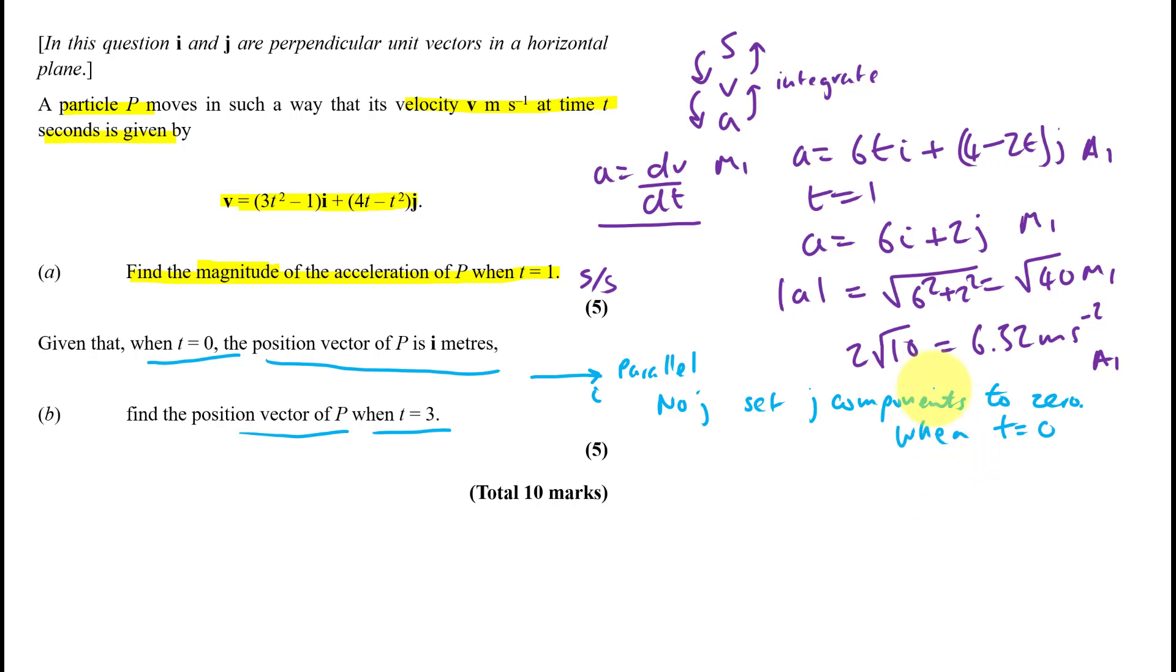So it's a position vector. We have v, we're trying to get to s. So we've got to integrate v. So if we integrate v, we could say r, because we usually use the letter r. Equals integral 3t squared minus 1 i plus 4t minus t squared j in respect to dt. We've got to be professional with this. That is worth a method mark, just writing that down. So please can we do this properly.